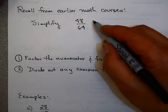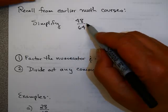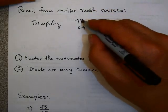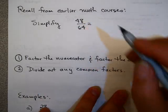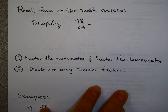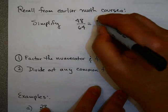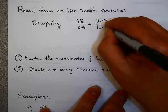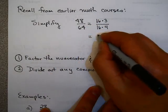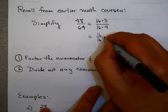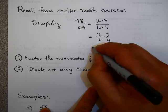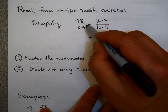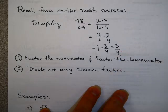Let's remember our arithmetic. From earlier math courses, you might have been asked to simplify a fraction like 48 over 64. What many of you would probably do is look for a number that goes into both 48 and 64. It turns out 48 is 16 times 3 and 64 is 16 times 4. You could write this as 16 over 16 times 3 over 4, and 16 over 16 is just 1, so my answer would be 3 quarters — the simplified form of this fraction, sometimes called lowest terms.